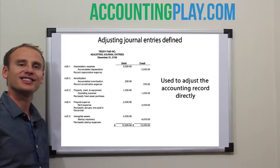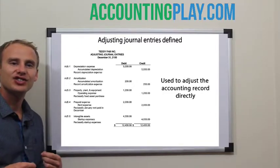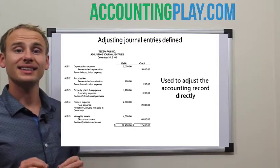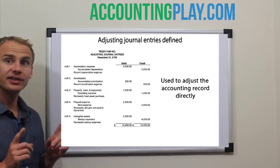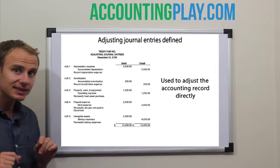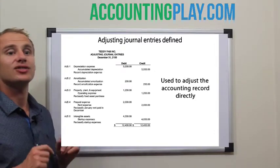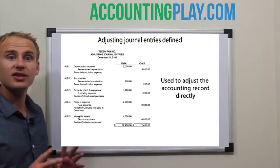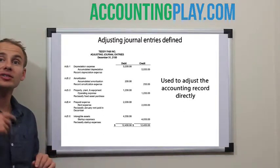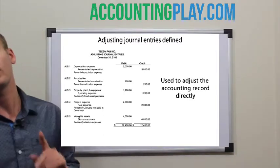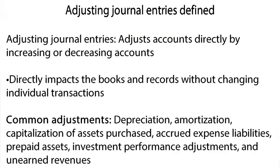Adjusting journal entries adjust records directly by increasing or decreasing accounts. This allows you to directly adjust the books and records without changing the individual underlying transactions.